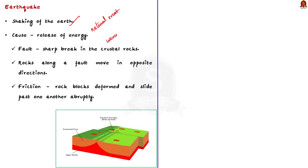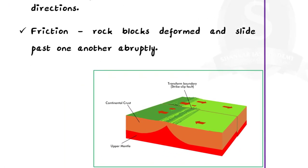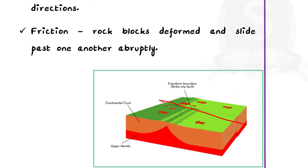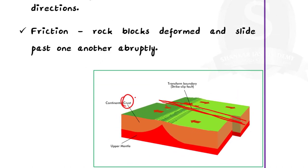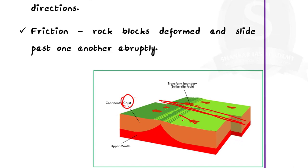Now, you may have a doubt. From where this energy is released and why does the earth shake? The release of energy occurs along a fault. Here, a fault is a sharp break in the crustal rocks. Know that the rocks along the fault tend to move in the opposite directions.